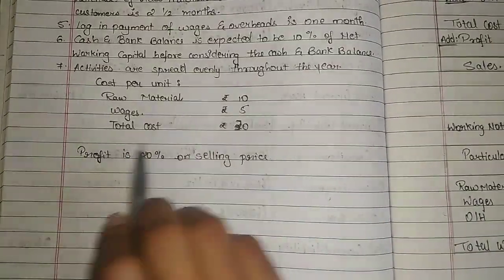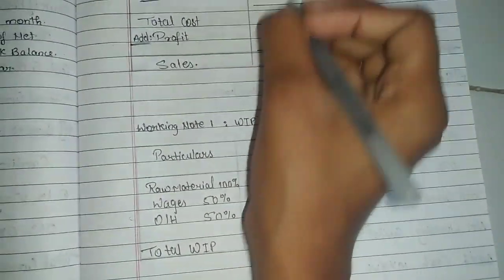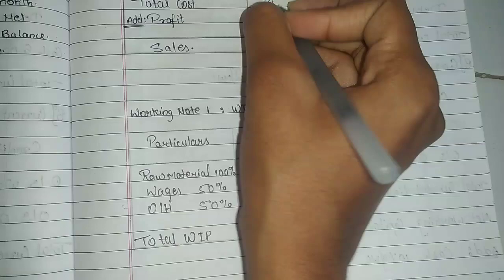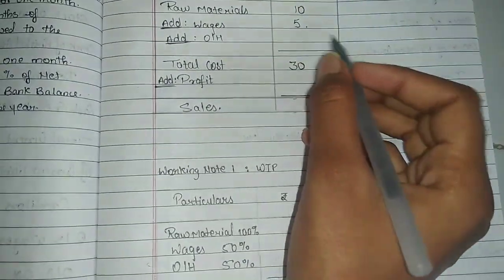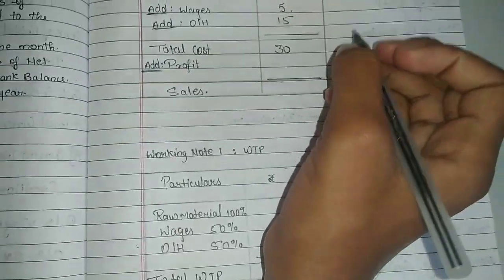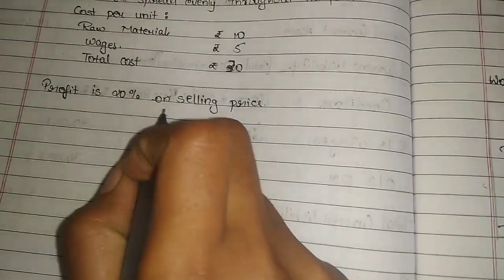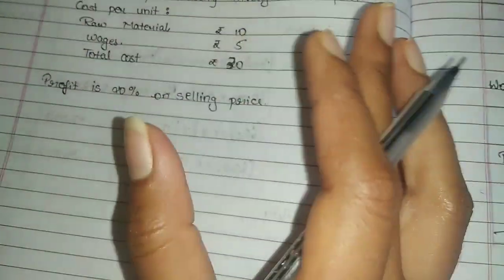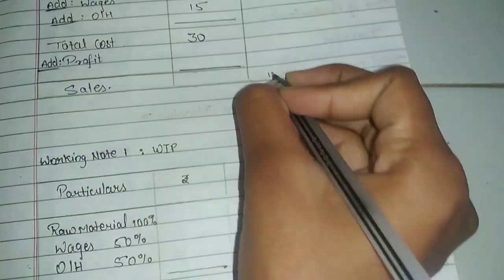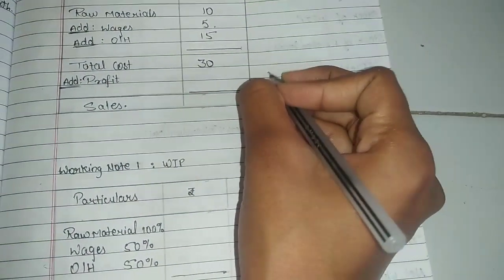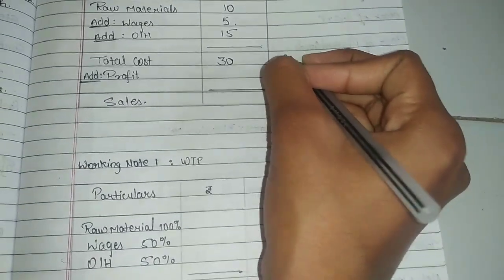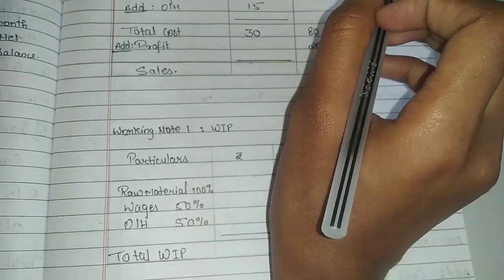Now the cost structure: raw materials is 10%, wages 5%, total cost is 30%. So overhead is 15%. Profit is 20% on selling price. We assume selling price is 100%. This is 100%, profit is 20%. So we have 80% as cost. This is 80%, right? Clear this much?